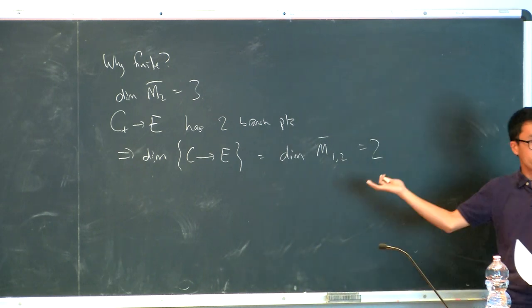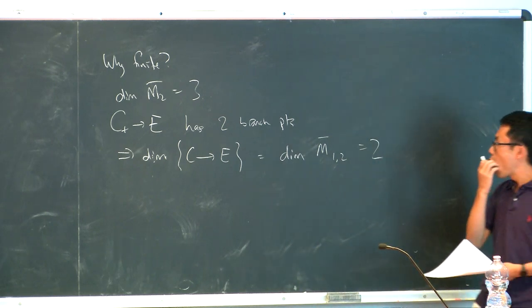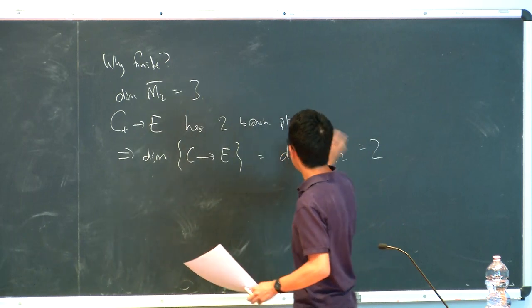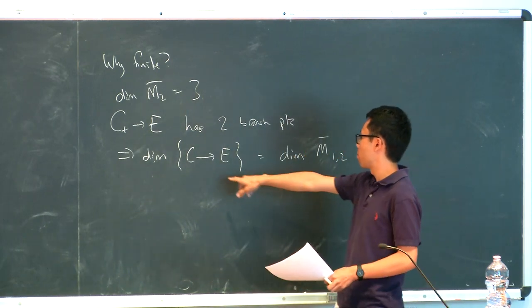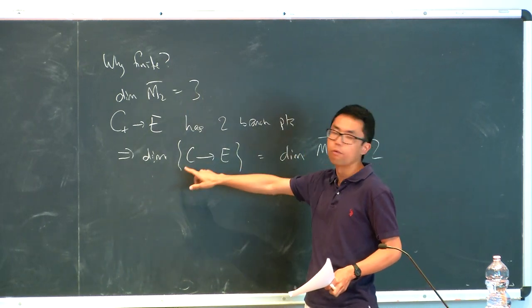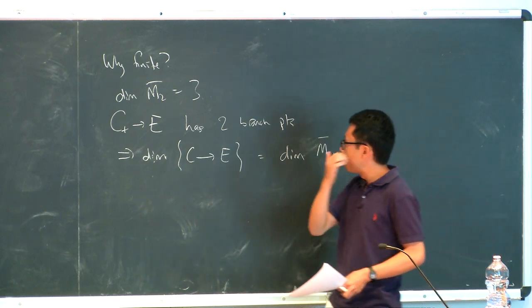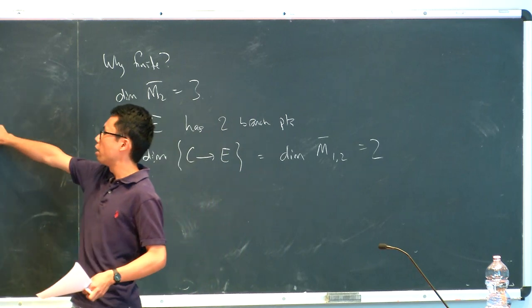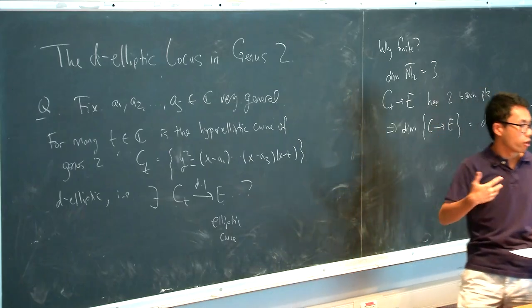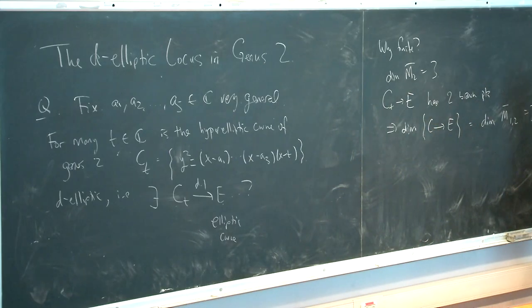And so we have a two-dimensional family of covers. Then you have to give some argument to convince yourself that if you have one genus 2 curve, you don't have infinitely many maps coming out of it. But the point is now I have a two-dimensional family. If I start with a one-parameter family, I should expect to see finitely many intersection points. So I should have finitely many fibers that live in this family.